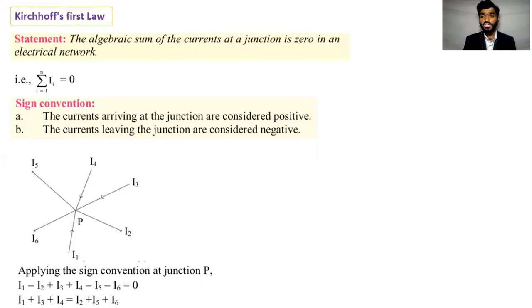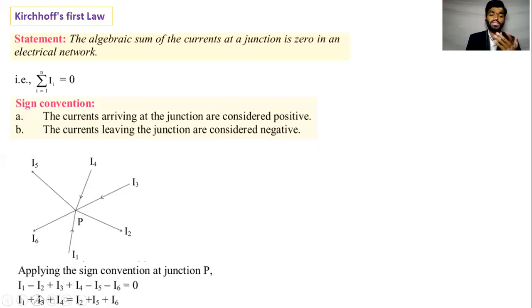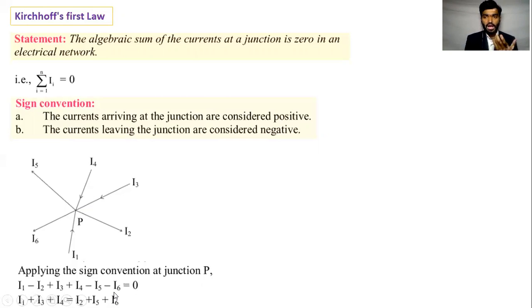Incoming current is equal to outgoing current. The incoming currents are I1, I3, and I4, which equal the outgoing currents I2, I5, and I6. This is the sign convention — a simple example of Kirchhoff's Current Law.